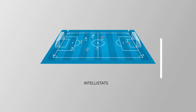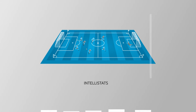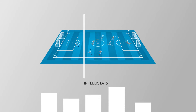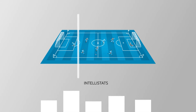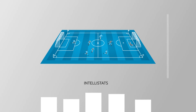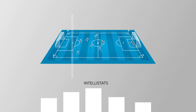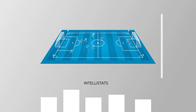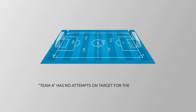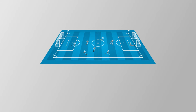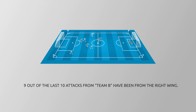IntelliStats is an automated runtime statistics analyst that can suggest graphics based on interesting data that is relevant at any point of the match. The absence of statistics is also a statistic, so you may see suggestions such as 'Team A has not shot on target for the last 30 minutes,' or '9 out of the last 10 attacks from Team B have been from the right wing.'